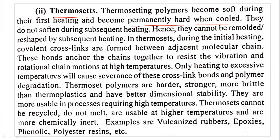The key difference: in thermoplastics, heating softens and cooling hardens — this process is reversible and continuous. In thermosets, the first heating softens them, but after cooling they are permanently hard and cannot be softened again. Examples of thermosetting polymers are vulcanized rubber, epoxy, phenolic, and polyester resins.